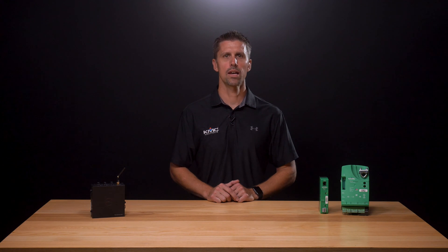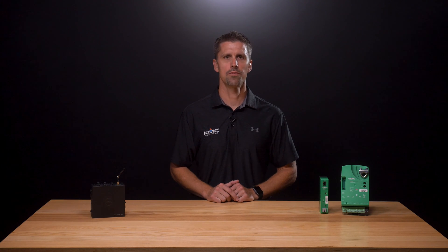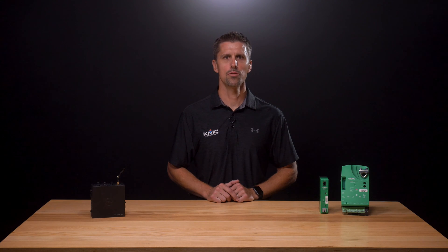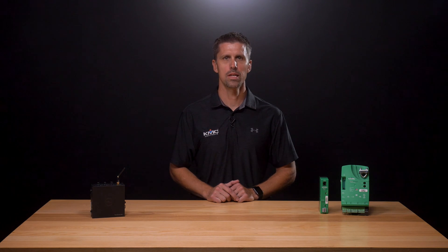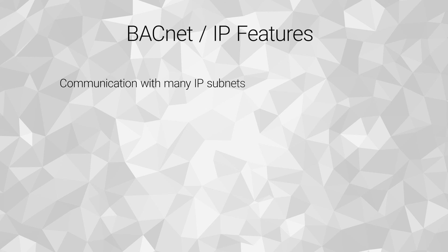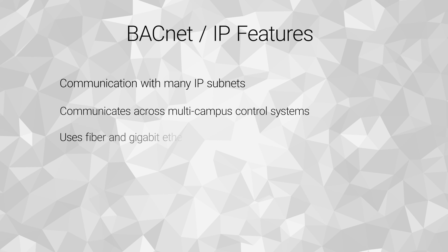BACnet supports seven types of networks and physical media to connect devices. The two most prevalent in use today are BACnet over IP and BACnet over MSTP. The IP in BACnet over IP stands for Internet Protocol, one of the main protocols that allow computers to talk with each other over a network. BACnet over IP allows for communication between different IP subnets, multi-campus control systems, and can even use fiber and gigabit Ethernet communications.